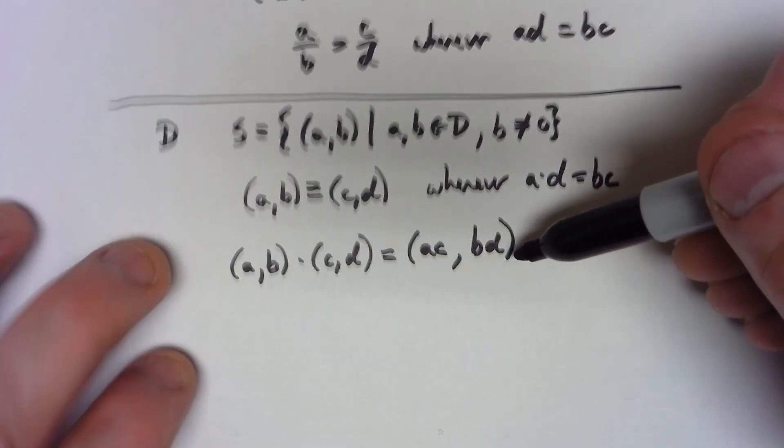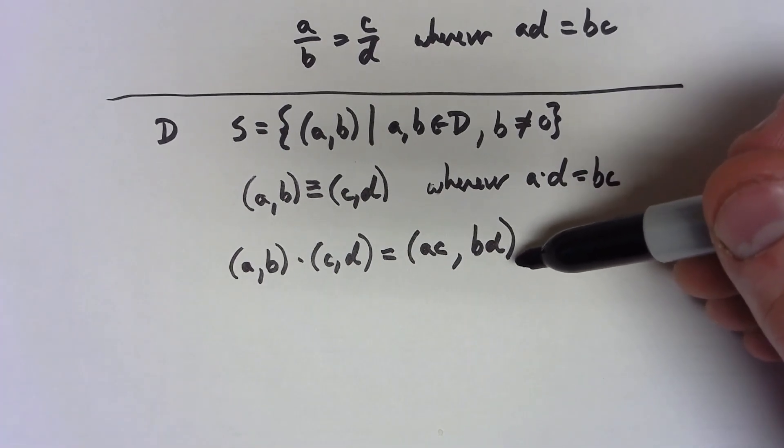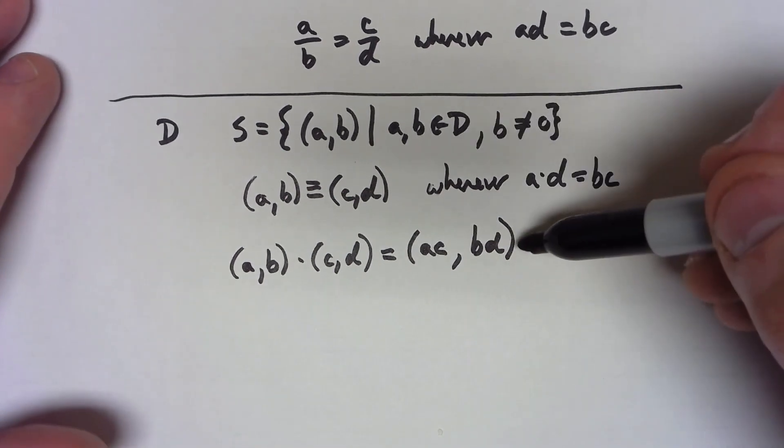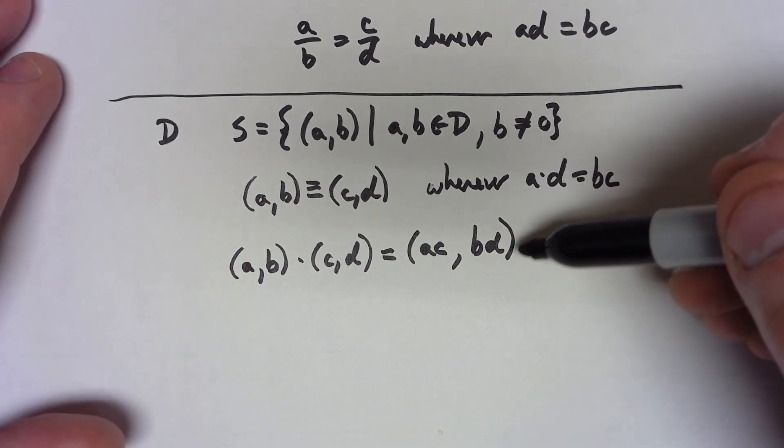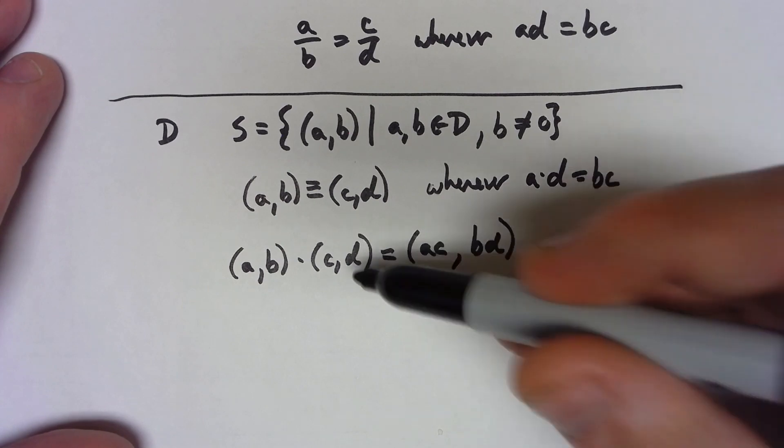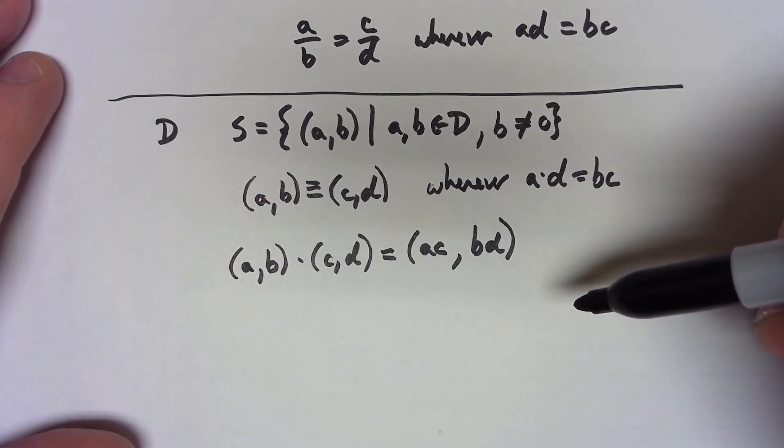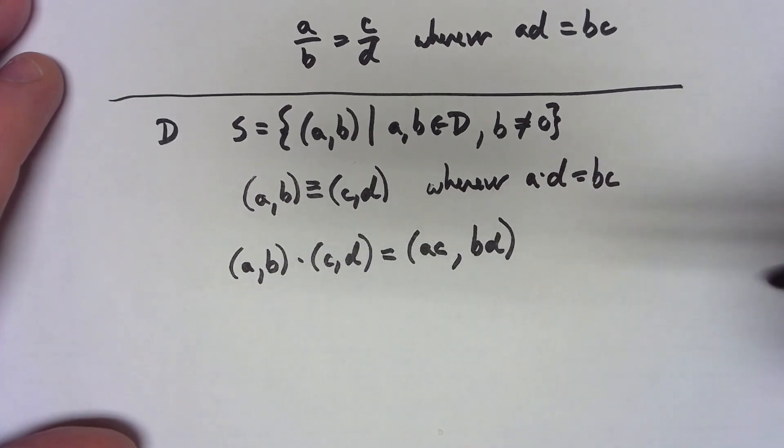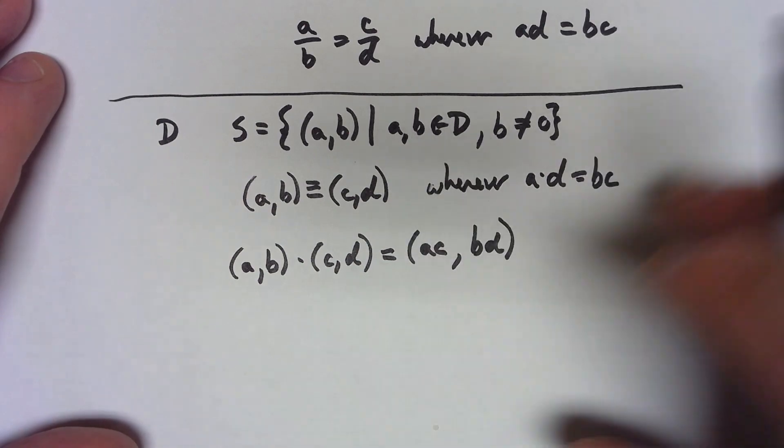And it's worth noting that right here is where the fact that we need an integral domain comes in. If we didn't have an integral domain, b times d could be zero and this wouldn't be a closed operation. So we need that to guarantee that this is actually well defined.